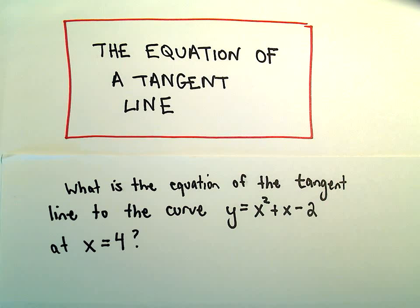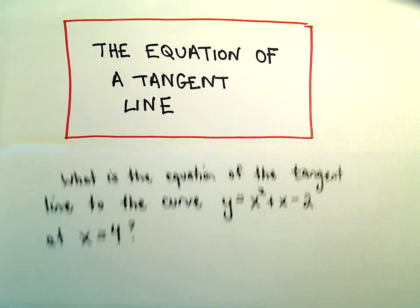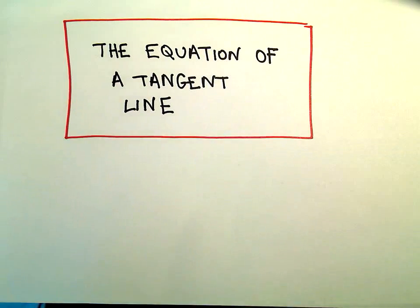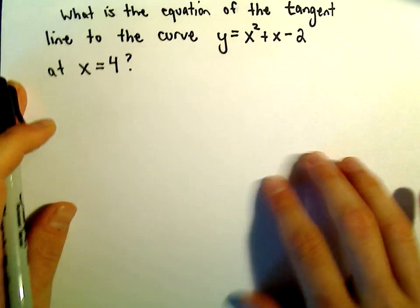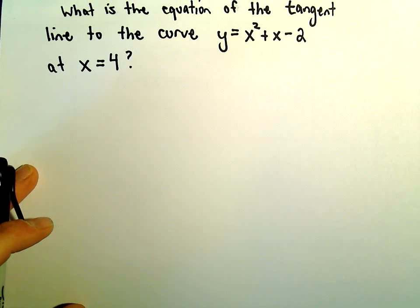Okay, so here we're going to do another example of finding the equation of a tangent line. We're going to find the equation of a tangent line to the curve y equals x squared plus x minus 2 at x equals 4.